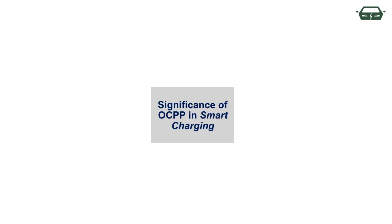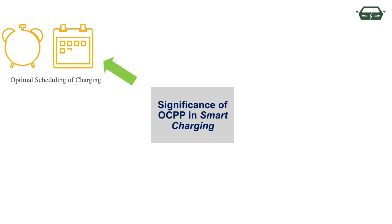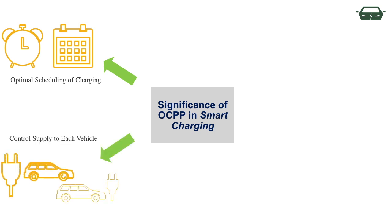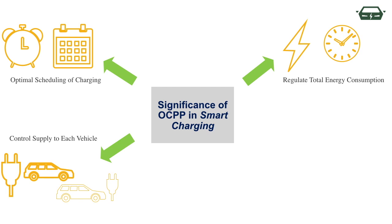Smart charging is basically the ability to automatically adjust charging patterns based on charging schedules and energy pricing. OCPP version 1.6 and other latest versions provide the CMS an ability to optimally schedule charging of EVs. Smart charging enables control over the supply to specific vehicles by putting limits on the maximum power that can be supplied by each charging gun. It also allows for priority charging for selected vehicles over others. Additionally, smart charging helps regulate total energy consumption and associated cost by taking into account factors such as load capacity, time-of-day tariff, and availability of renewable power.